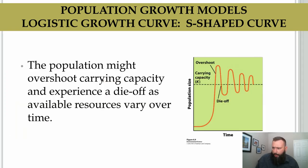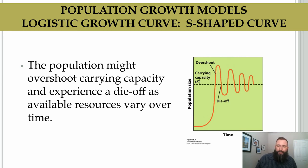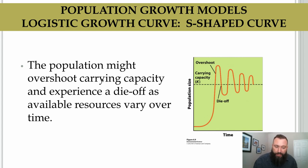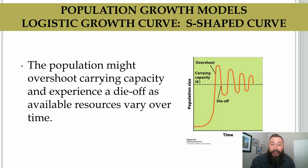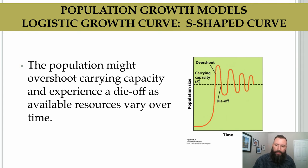There can be overshoots and die-offs in some populations. We saw this with the Kaibab deer in Arizona — an extreme overshoot above carrying capacity followed by a massive starvation die-off. Populations might overshoot carrying capacity as available resources vary over time. For example, mosquitoes might overshoot maximum carrying capacity, and then a drought means less water to reproduce in, causing a massive die-off — a roller coaster of population dynamics moving forward.